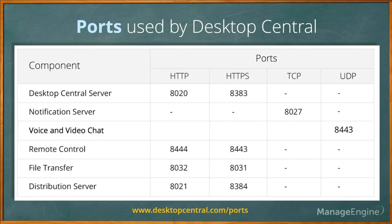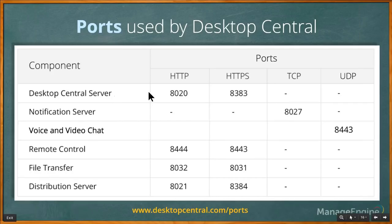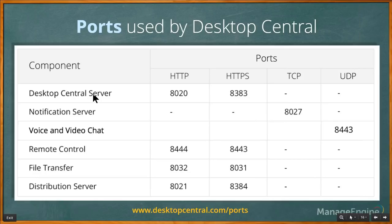Here are the port details managed by Desktop Central. We recommend opening the ports shown to manage specific features. Agent-to-server communication happens on port 8020, and server-to-agent notification communication happens on port 8027 TCP. Voice and video chat works on UDP 8443. If a Windows firewall is blocking ports, you'll be notified on the home screen. Agent and server communication happens securely on port 8383 — if this port is blocked, patch or software deployment tasks will not complete. For more information, visit www.desktopcentral.com/ports.